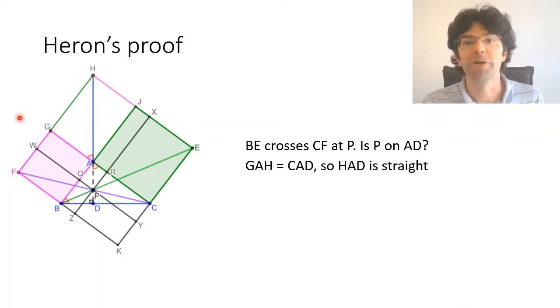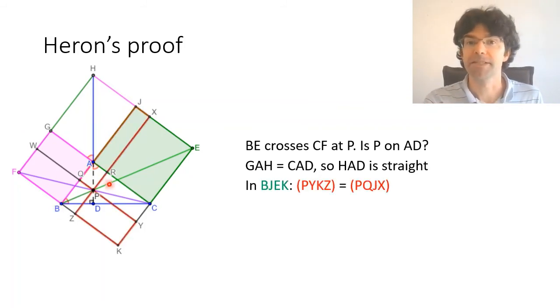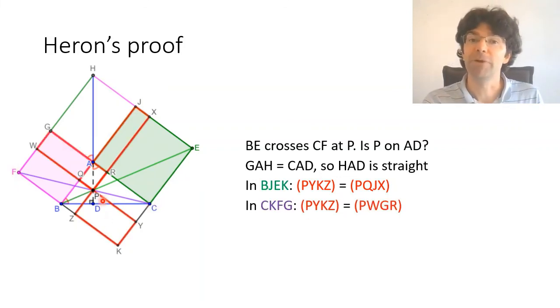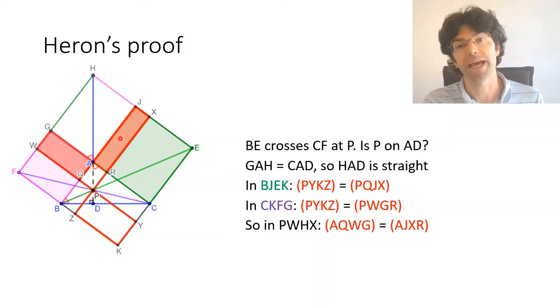Now this is where all the complementary rectangles come in. Since P lies on BE the two red rectangles here have the same area, and since it's on CF we can then add a third equal rectangle. Now if we compare these two here and remove the shared area from them we see that the shaded rectangles AQWG and AJXR are equal, and those are the complementary rectangles generated by A on the diagonal HP. So A really is on that diagonal so HAPD is a straight line as required.